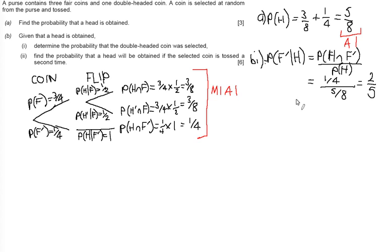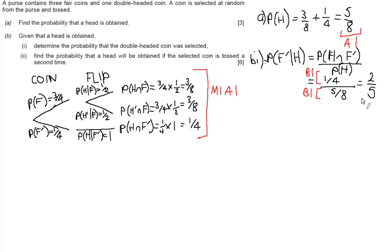For marks on this part: we get a statement mark (B1) for putting one-quarter as the numerator, a statement mark for putting five-eighths as the denominator — they must be in the correct positions — and then one final statement mark for stating the answer two-fifths, awarded only if the answer is correct.